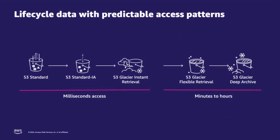You can also use S3 lifecycle policies to move data with predictable access patterns to lower cost storage classes over time. Lifecycle policies are rules you can set up to move objects to another storage class after a given number of days. These rules are based on the creation date of the object and can be filtered to apply to the whole bucket, prefix, or set of tagged objects.